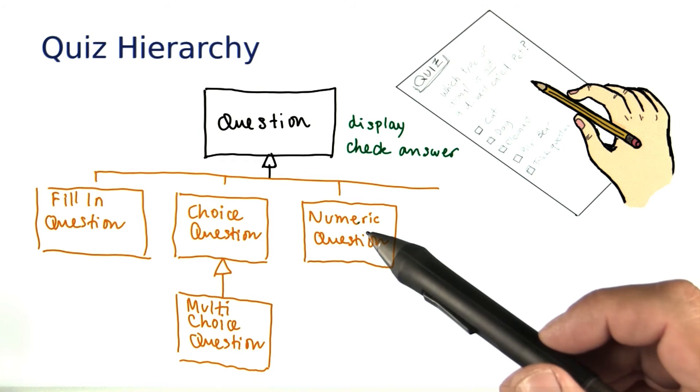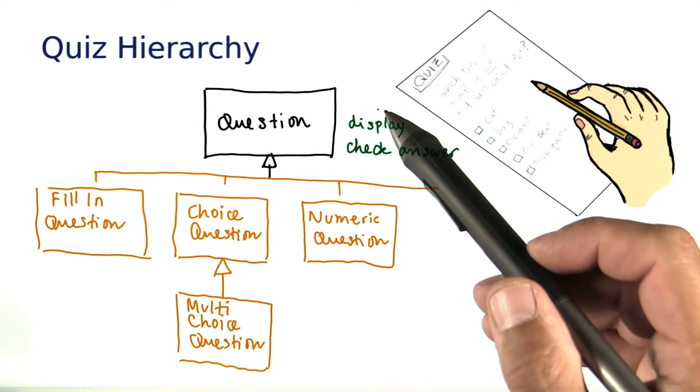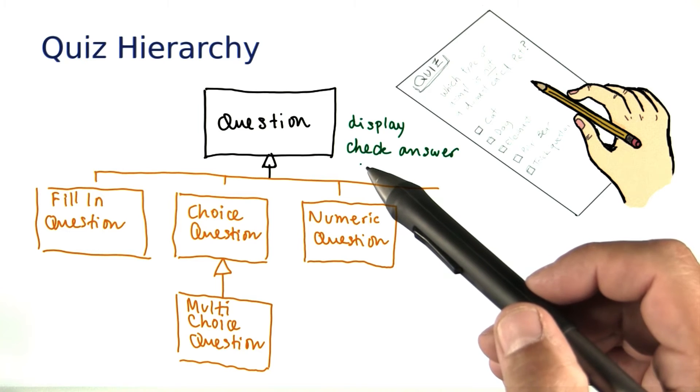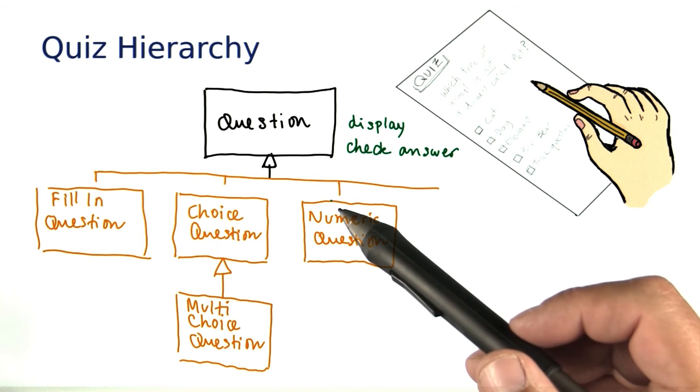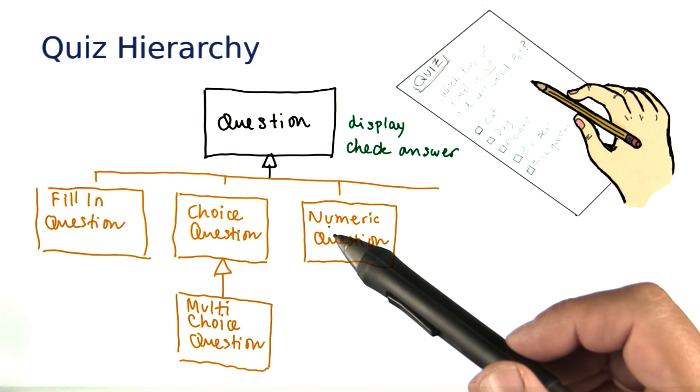So, the idea is that the super class question will give reasonable implementations of these methods, and the subclasses can modify them if they don't work for the context of the subclass.